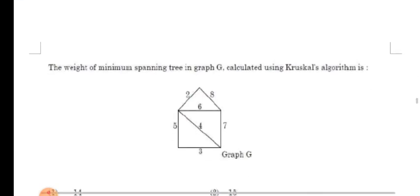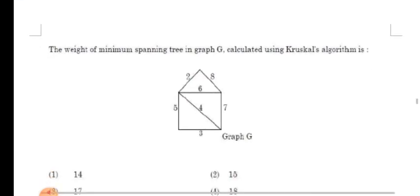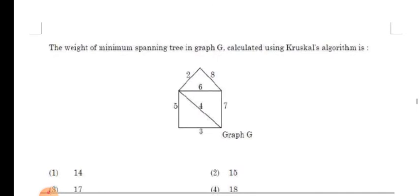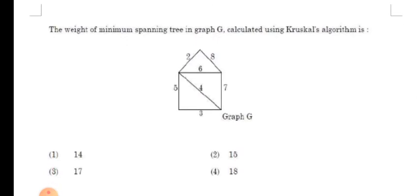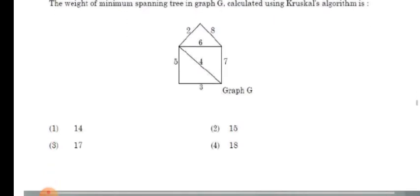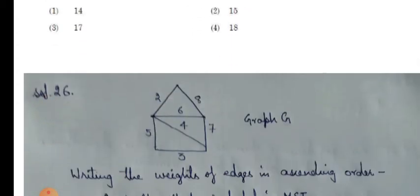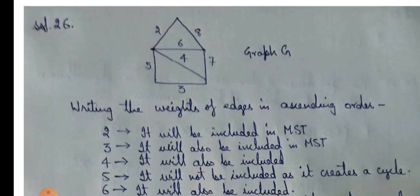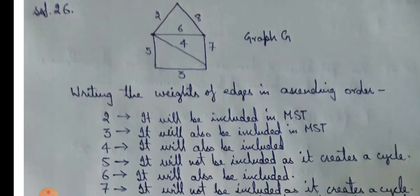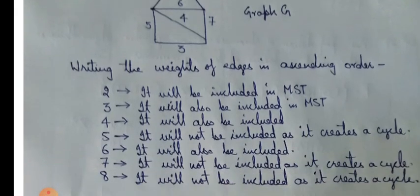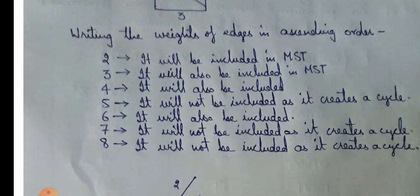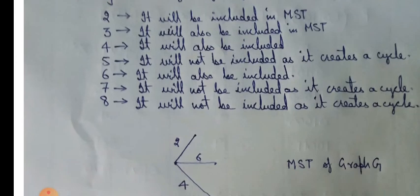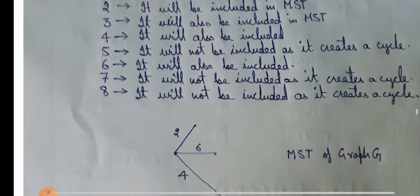Moving on to our next question. The weight of minimum spanning tree in graph G calculated using Kruskal's algorithm is. We have been given a graph G and we have to calculate the weight of minimum spanning tree. So let's see the solution. Writing the weights of edges in ascending order, we get 2, 3, 4, 5, 6, 7, 8. Now including 2 into the minimum spanning tree, it will be included, now 3, it will also be included, now 4, it will also be included.